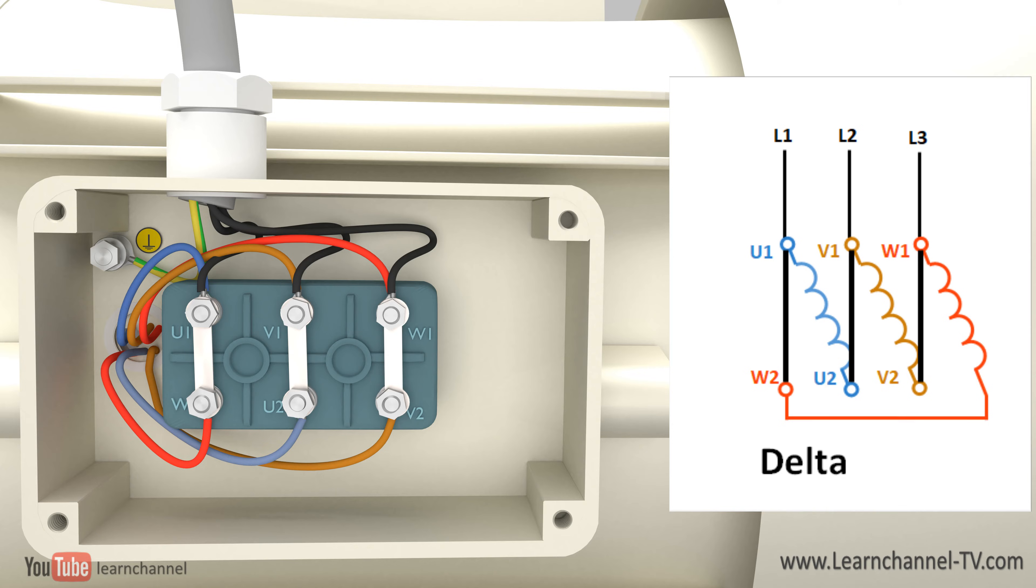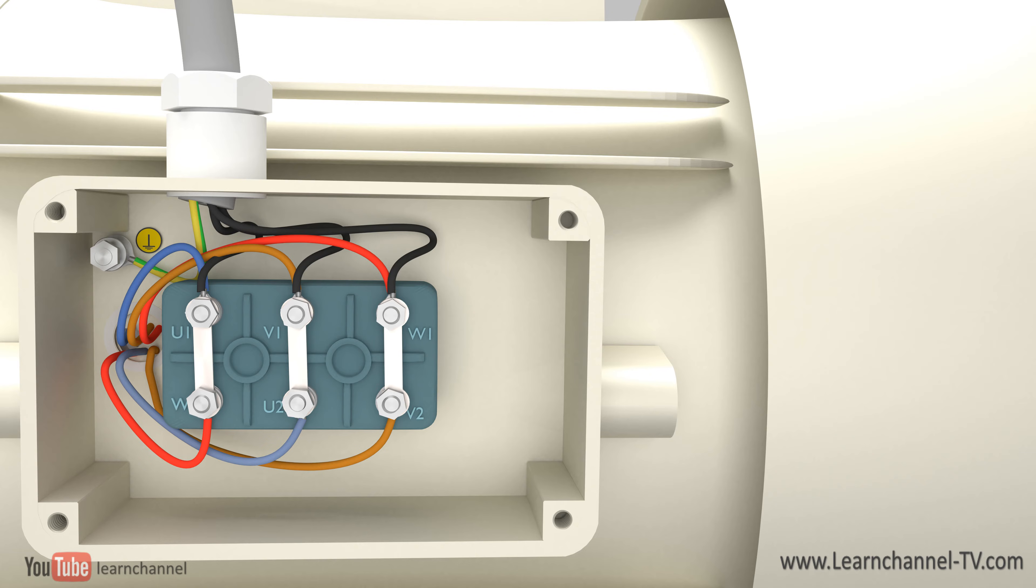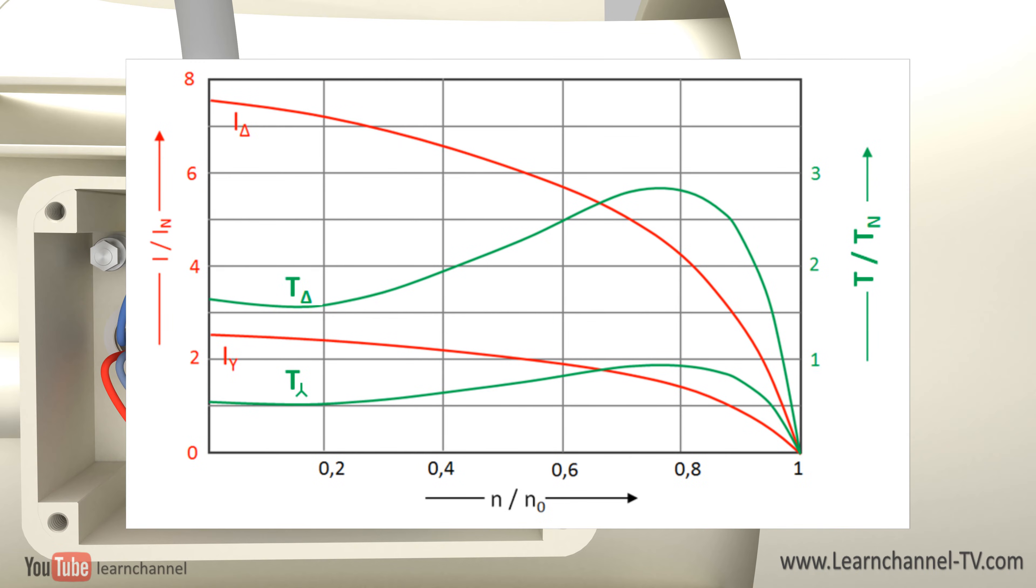You should know that the conductor current in star is only a third as in delta. Unfortunately, the torque is also only one third as in delta. Be aware of this when you start the motor under load.